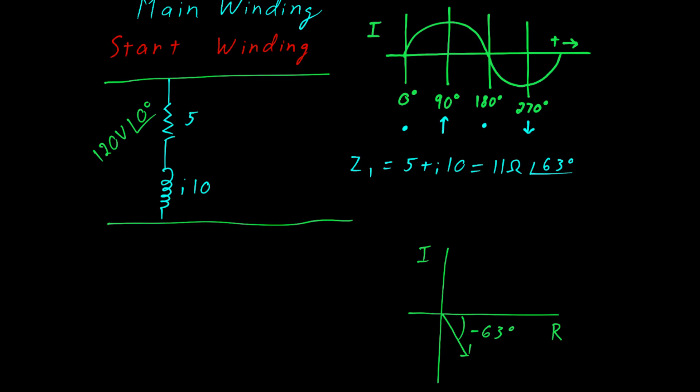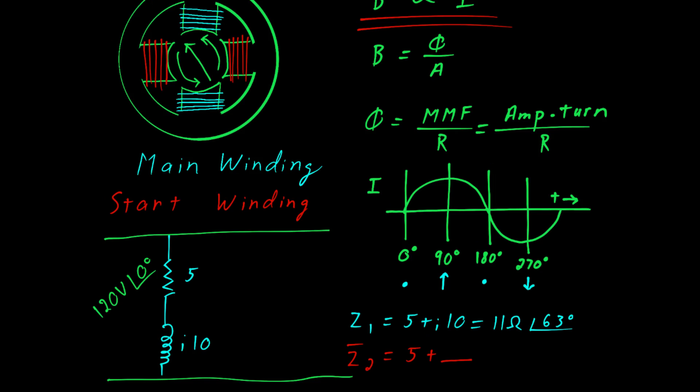Now when we added the start winding we know that we need to generate another current that is at a right angle to our main winding. We'll sketch that here as a current that has an angle of 27 degrees. For this discussion let's assume the start winding is identical to the main winding and both have a resistive component of 5 and an inductive component of J10. To change the phase angle of the current then we're going to need to add a capacitor. Again we want our impedance Z2 to be equal to 5 plus something such that that something is going to give us an angle of negative 27 degrees.